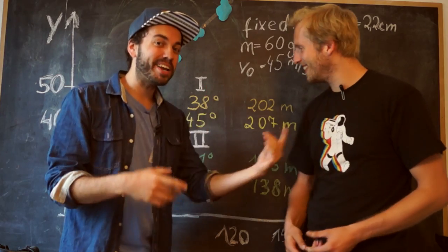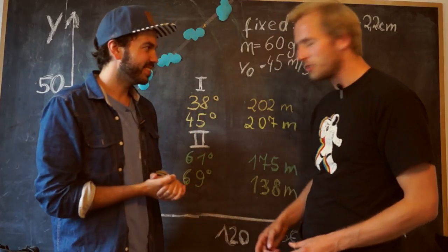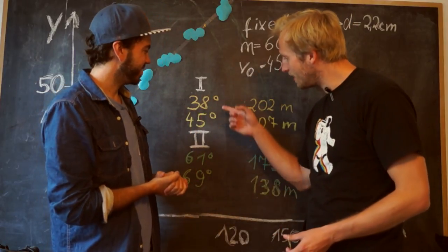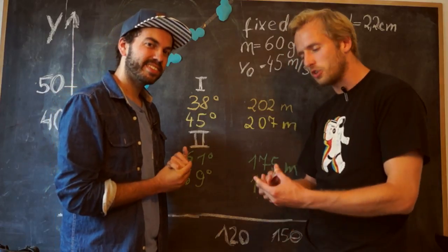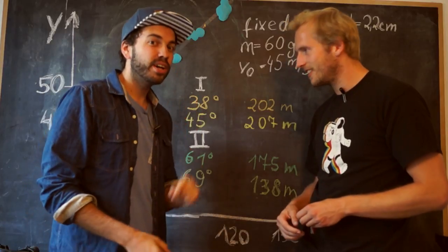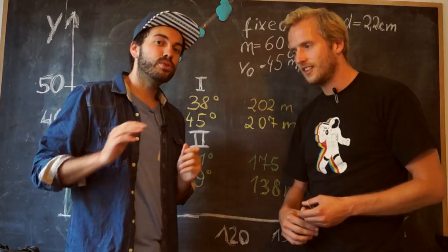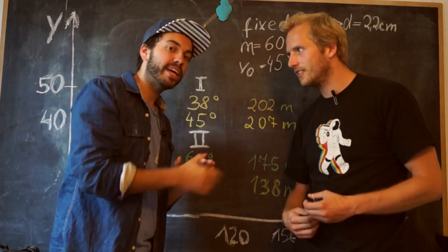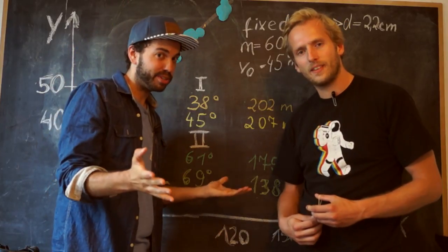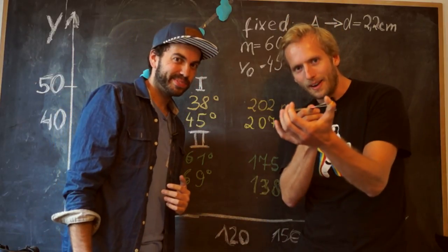Hey Jörg, Simon and I have calculated and these are our results. Number one, you could choose an angle between 38 and 45 degrees to launch your projectile directly into the castle wall. And your second option is to choose an angle in between 61 and 69 degrees to launch above the castle wall and hit the castle within its ground. And now it's up to you. Show us if we have calculated correctly. Bye bye!